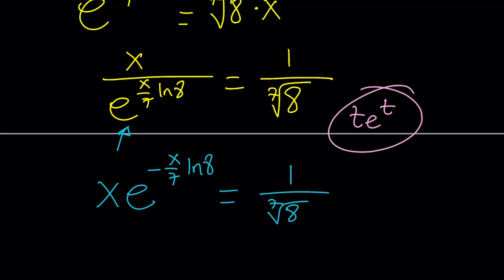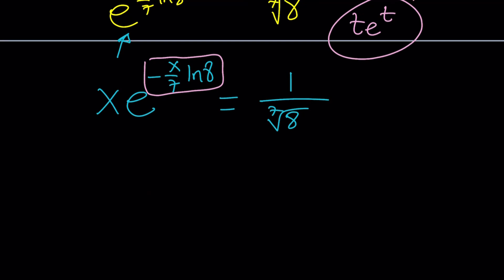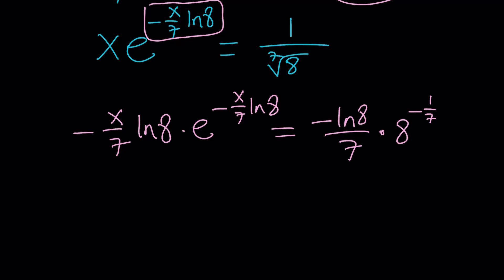What we need now is since this is going to be our t, I need to multiply both sides by negative ln 8 over 7 or negative 1 over 7 times ln 8. So when we do, we're going to get negative x over 7 ln 8 times e to the power negative x over 7 ln 8 equals, when I multiply both sides by negative ln 8 over 7, I have to do the same thing on the right hand side, negative ln 8 over 7 multiplied by 1 over 7 root of 8. And I could probably write it as 8 to the power negative 1 over 7.